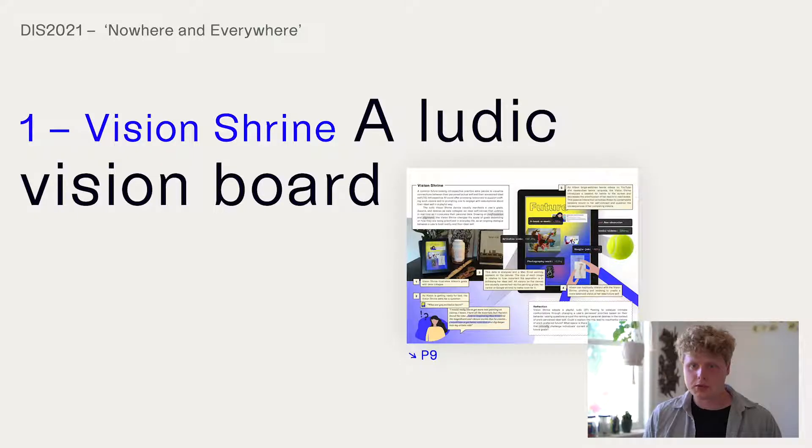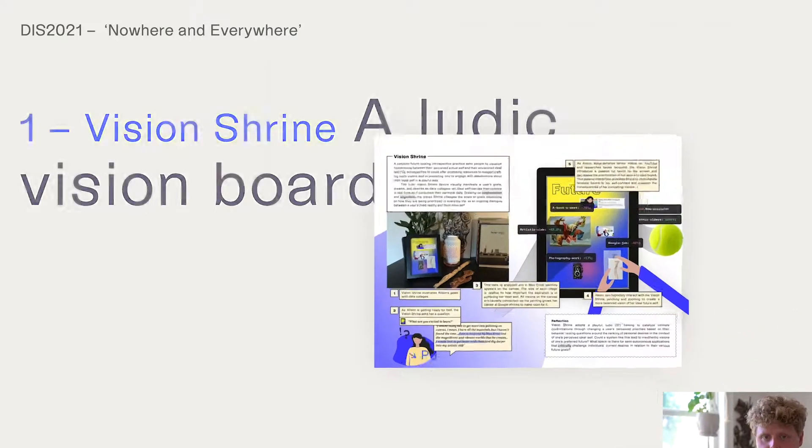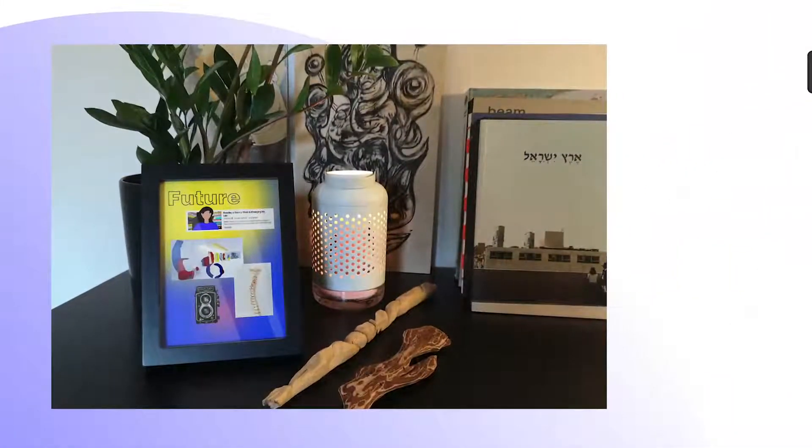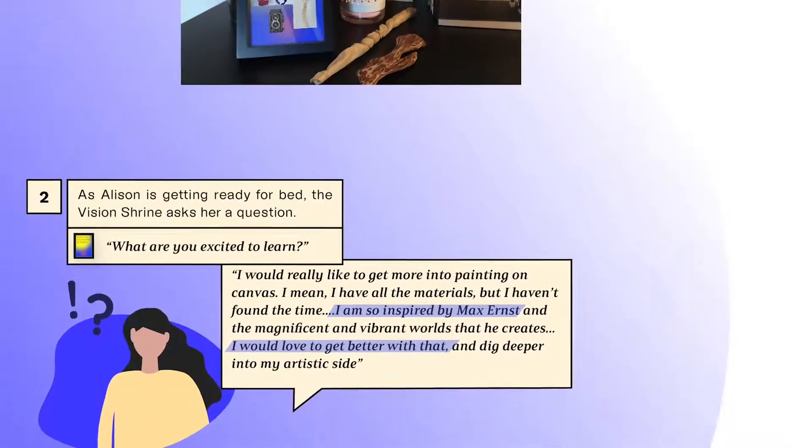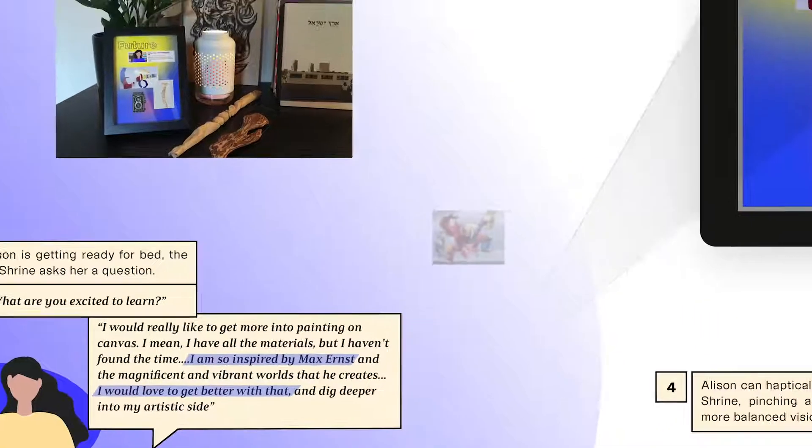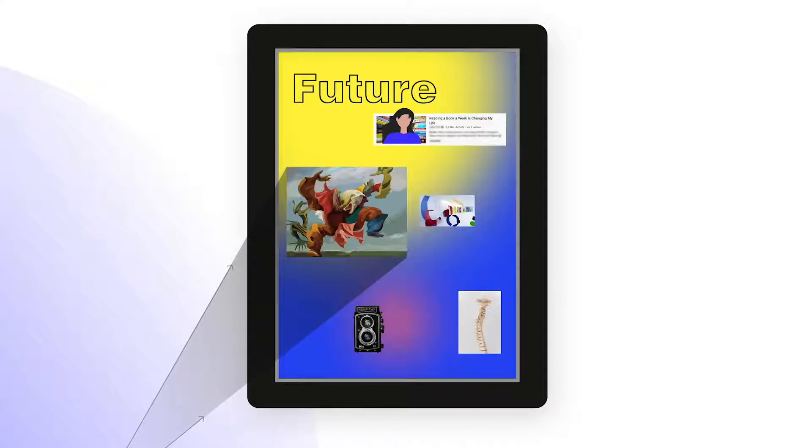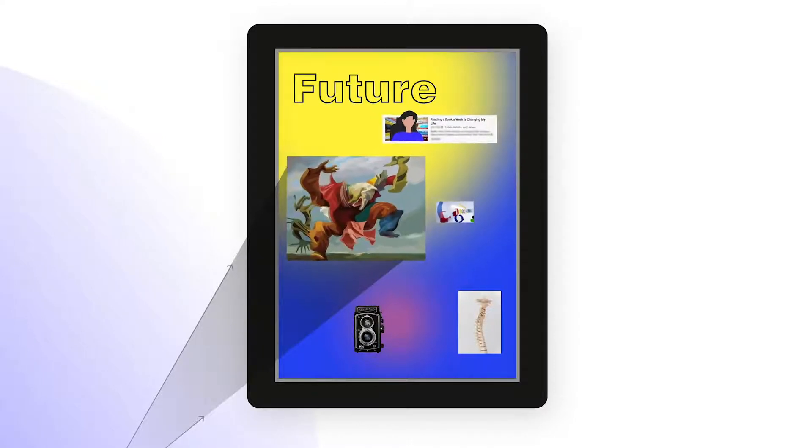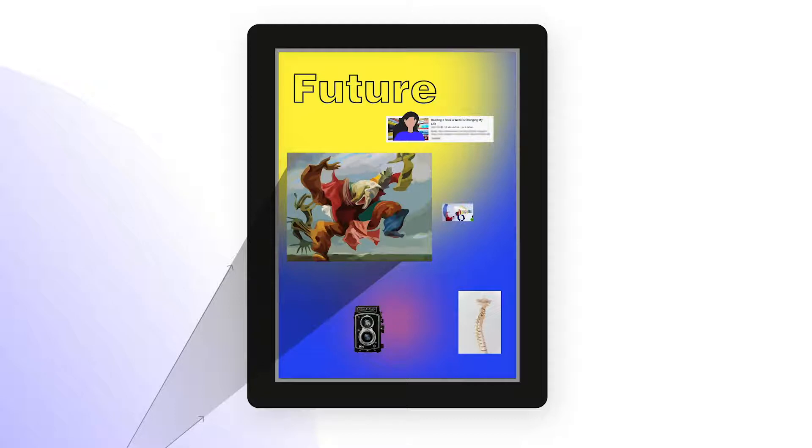A common future-looking introspective practice asks people to visualize connections between their perceived actual self and their envisioned ideal self. The Vision Shrine device visually manifests the user's goals, dreams and desires as data collages, an ideal self-canvas that updates in real-time as it consumes their personal data. The device prompts our user Alison, what are you excited to learn? Her answer is analyzed and a Max Ernst painting appears on the canvas. Each vision is cautiously connected as the Max Ernst image crawls, her career at Google shrinks to make room for it.